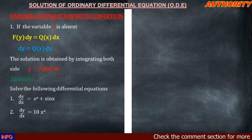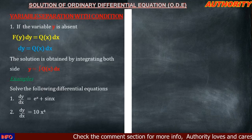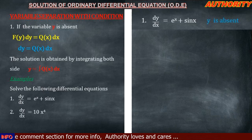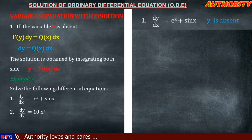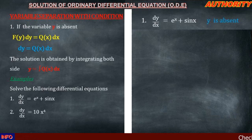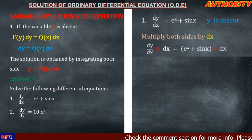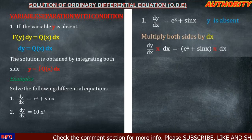Number one: dy/dx equal to e^x plus sin(x). Number two: dy/dx equal to 10x^4. For solution number one, we see that dy/dx equal to e^x plus sin(x), and in this case y is absent. To make dy the subject, we multiply both sides by dx, giving us dy/dx times dx equal to (e^x plus sin x) dx.